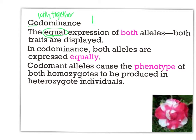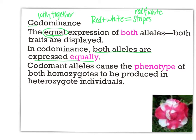Instead of red plus white equals pink, with co-dominance it's red plus white equals red and white stripes — or checkers, or polka dots. This is where both alleles are expressed equally; you see both full traits. They don't mix. In incomplete dominance the traits would mix, but with co-dominance you see full red and full white at the same time.